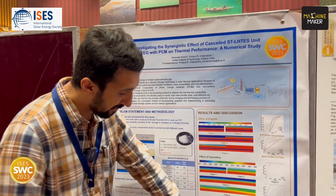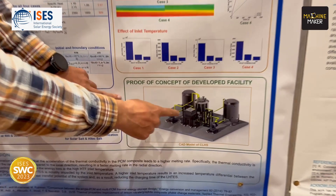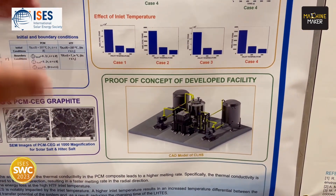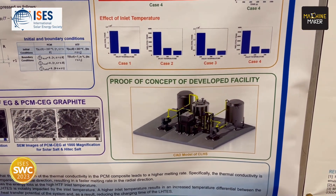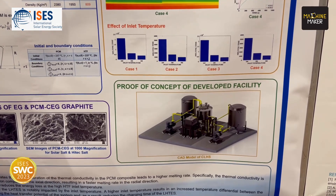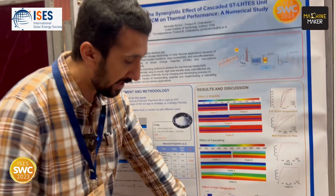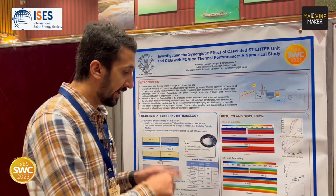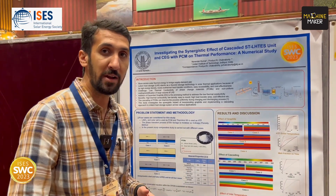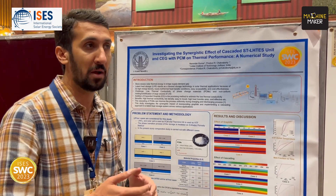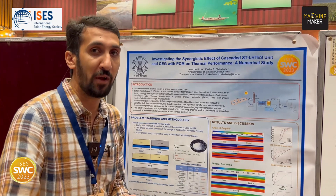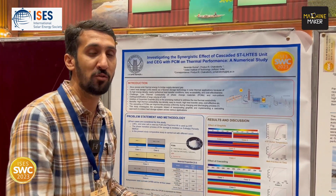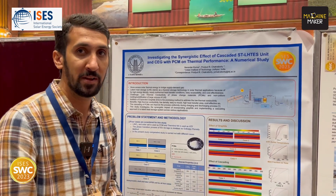We have also developed a facility with three heat exchangers and three storage units, using three different phase change materials of nitrate salts across three different temperature ranges. Experimentally, we found that with the addition of graphite and the cascaded effect, there is much better charging performance and heat transfer enhancement. Thank you.